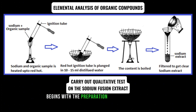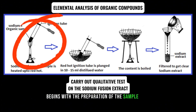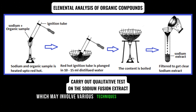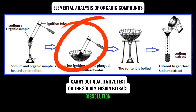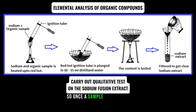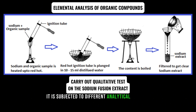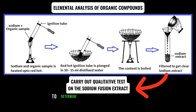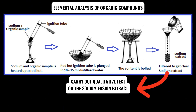The process of elemental analysis begins with the preparation of the sample, which may involve various techniques such as dissolution, extraction, or combustion. Once the sample is prepared, it is subjected to different analytical methods to determine the elemental composition.